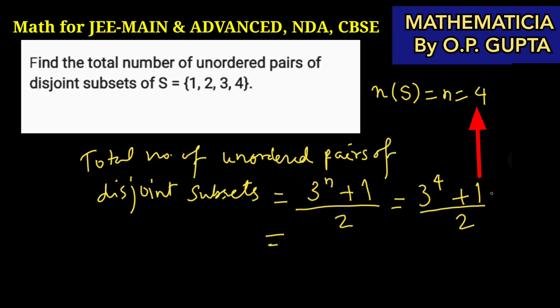Plus 1, that is 82 over 2, gives us 41. So 41 is the total number of unordered pairs of disjoint subsets of set S. Hopefully you have understood this.